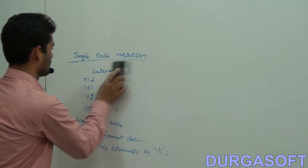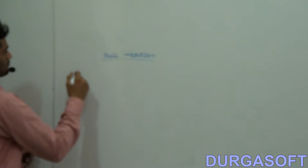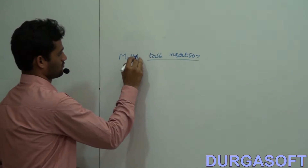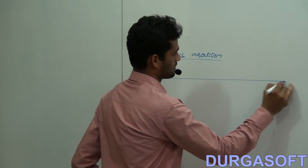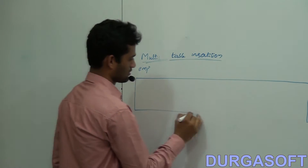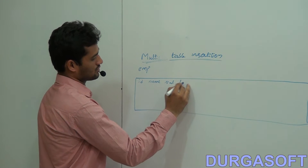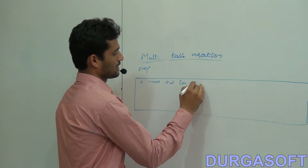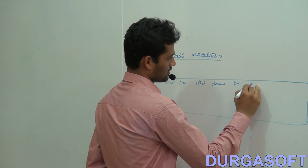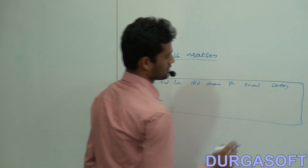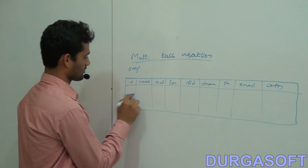Multi-table insertion — very simple. I have one big EMP table with columns: ID, name, salary, location, department ID, department name, phone number, email ID, and country. Already I'm having some data in this table.